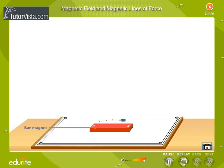Repeat this until the other end of the magnet is reached. Join the points. These points form a curve. The curved line represents a magnetic line of force.